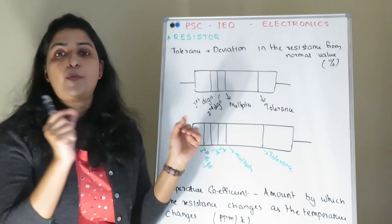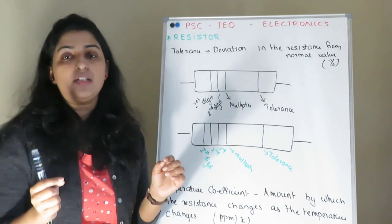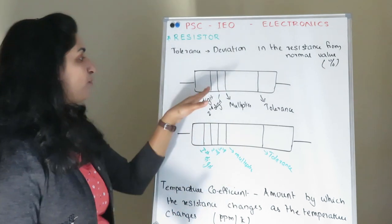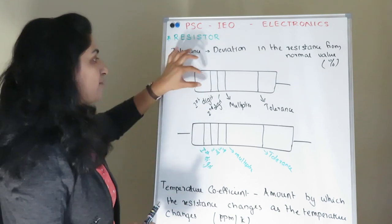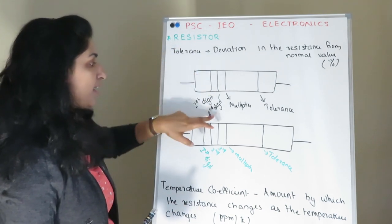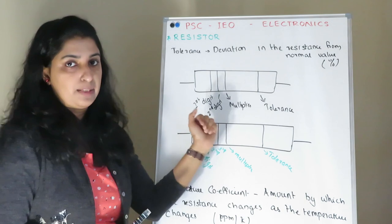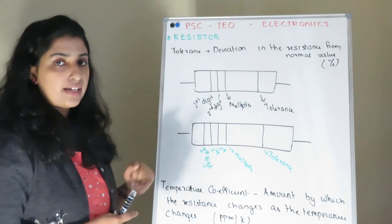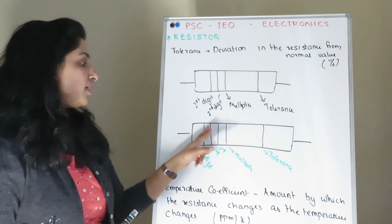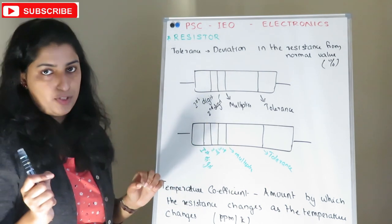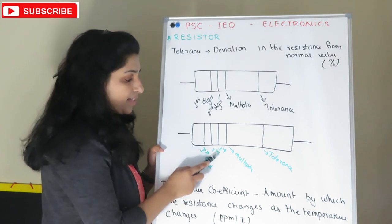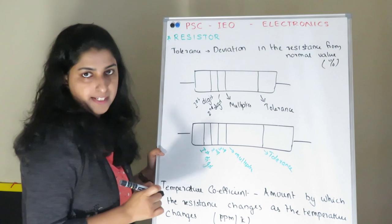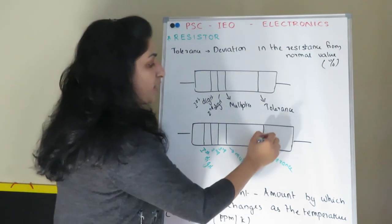The last topic is color coding — the way we read the resistance value from colored bands. In a 4-band code, the first color is the first digit, the second color is the second digit, the third color is the multiplier, and the fourth color is the tolerance. In a 5-band code there are five colored bands.